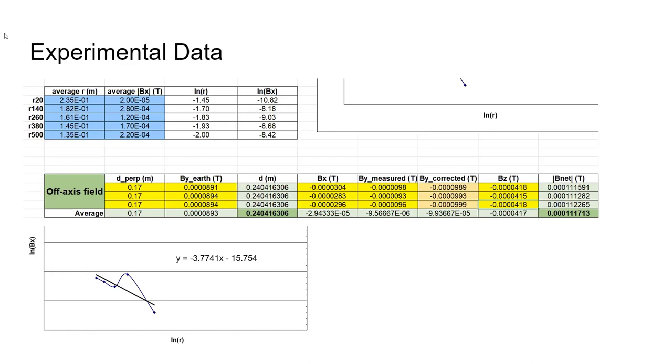So as for the data, this was the on-axis data. And as the phone got closer to the magnet, the strength of the magnetic field increased. And then this was the off-axis field data. And the perpendicular distance found was about 0.17, this was the corrected value.